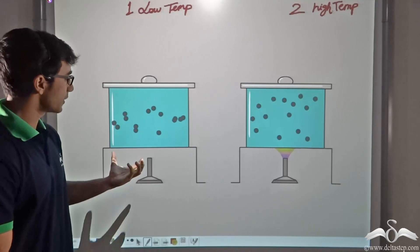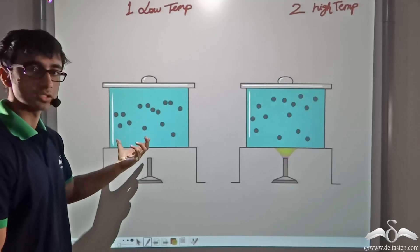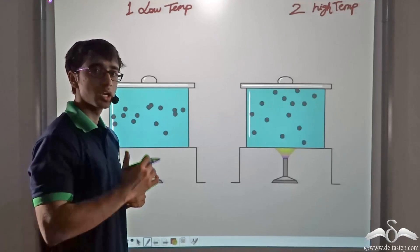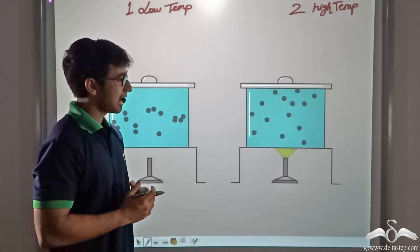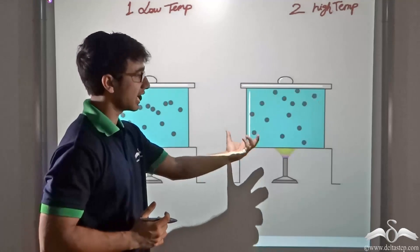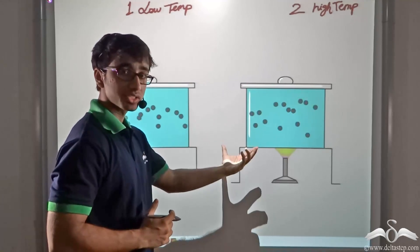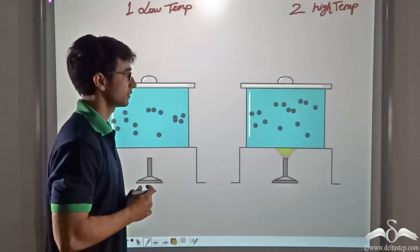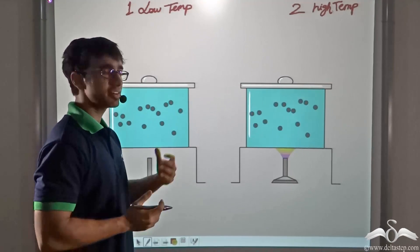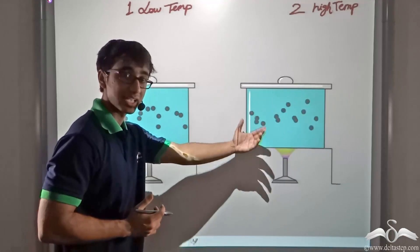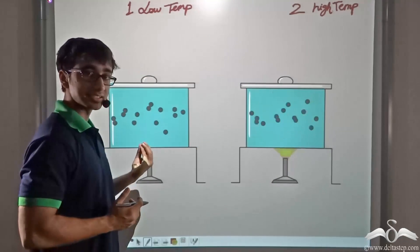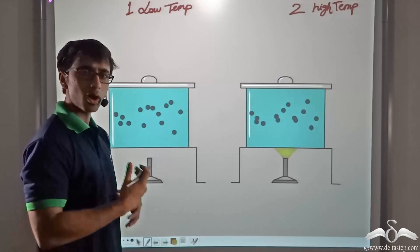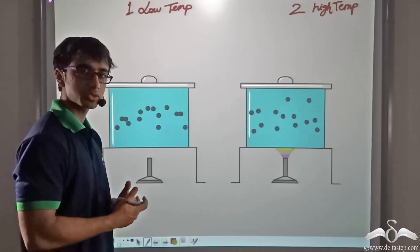We can say that when the temperature of the vessel is low, the molecules inside have a low kinetic energy, and when the temperature is high, the molecules have a higher kinetic energy. So if they have a higher kinetic energy and a higher speed, or in the other case a lower kinetic energy and a low speed, how do you think it affects the speed of sound?